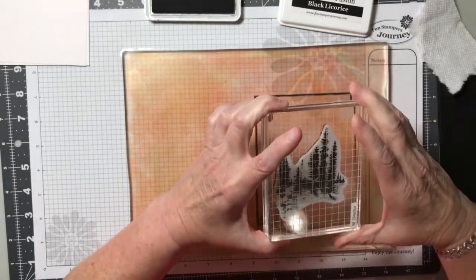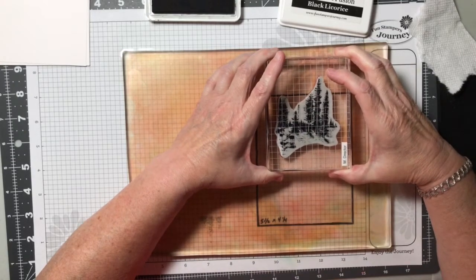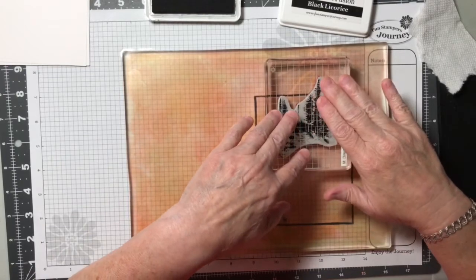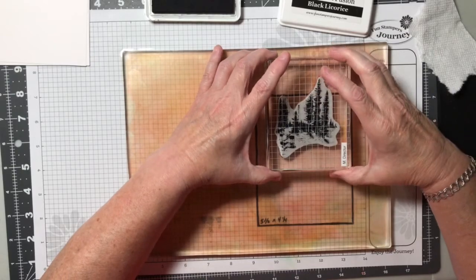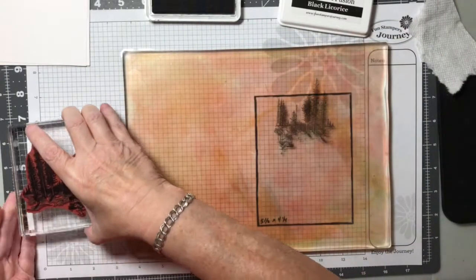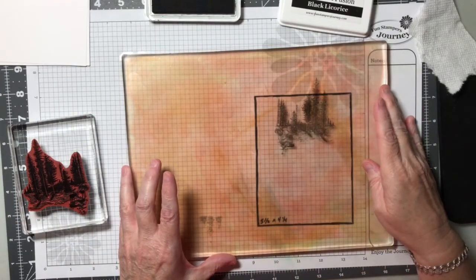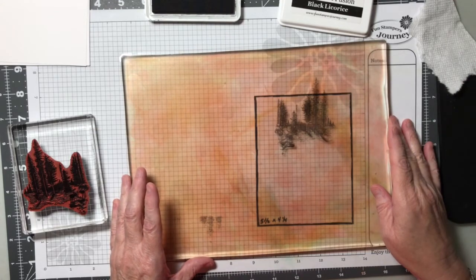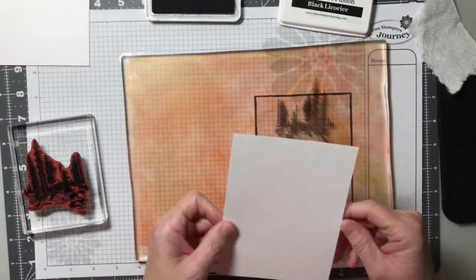Now, this I'm going to stamp as if this is the top of the card. I'm going to press gently. There's going to be a little bit of give because we're doing it right on the gel press. Lift straight up. If the image isn't as straight as you would like, you can adjust the gel press just a little bit. Or you could take a baby wipe, clean this off, and then do your image over.